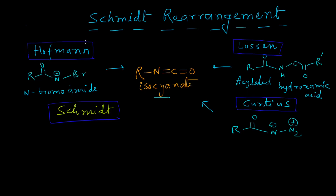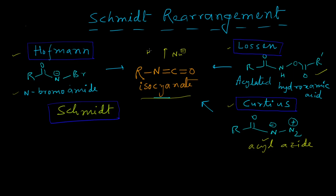In this video we are going to discuss the Schmidt rearrangement. We all know about the Hofmann rearrangement, Lossen rearrangement, and Curtius rearrangement, which were discussed in previous videos. Hofmann rearrangement involves the negatively charged anion of N-bromoamide as the starting material. Lossen rearrangement involves acylated hydroxamic acid, and Curtius rearrangement involves acyl-azide. All of them eventually produce isocyanate as the intermediate during the reaction, which then undergoes nucleophilic attack — in most cases water is the nucleophile — leading to formation of an amine.